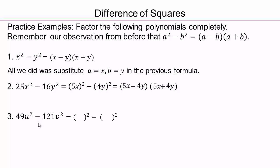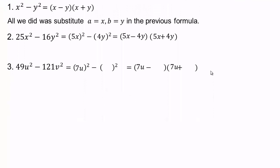Pause the video and try. Get it in that form — if you have difference of squares it's going to look like this. All you have to do is figure out what goes in each spot. Whose square is 49? Good — 7u — so that goes there and there. 121: the square root of 121 — factor 121 and take the square root — that's 11v. Good, and that will go here and here.